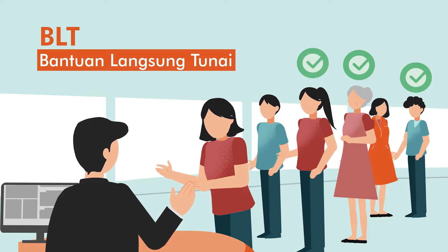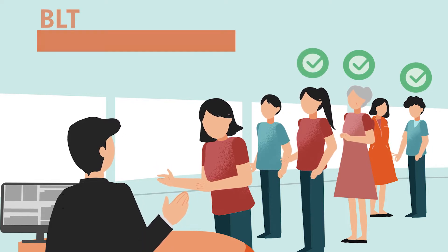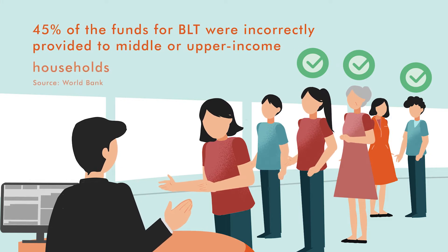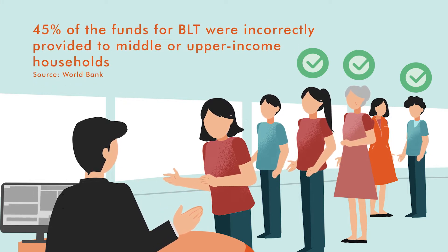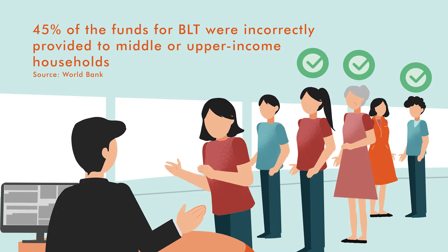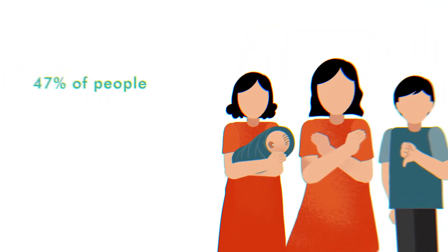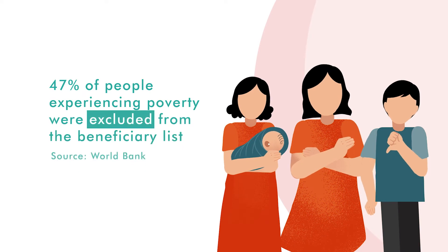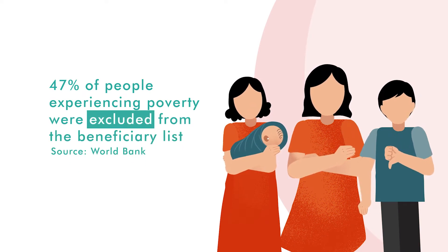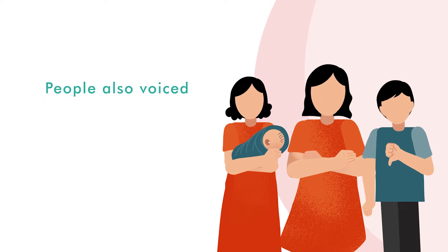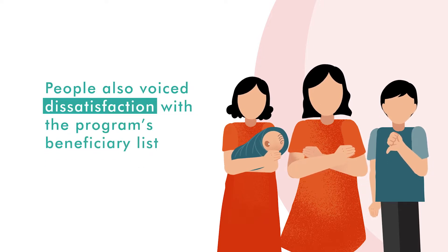However, identifying program beneficiaries in Indonesia was challenging. Take the case of the unconditional cash transfer program, or Bantuan Langsung Tunai (BLT), as an example. The World Bank estimated that 45% of the funds for BLT were incorrectly provided to middle or upper-income households, and 47% of people experiencing poverty were excluded from the beneficiary list.